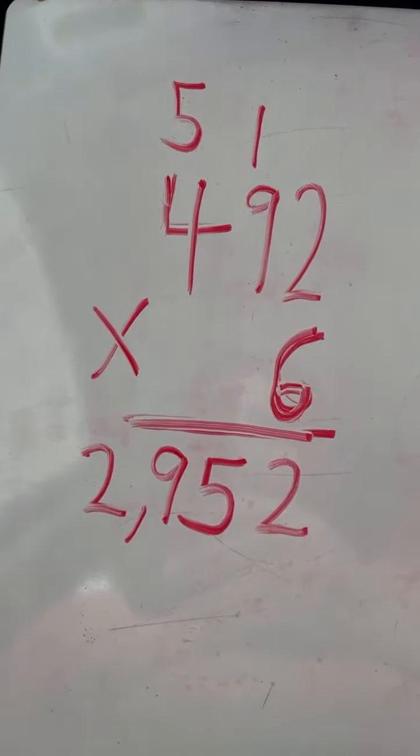And we have our final answer. Four hundred ninety-two times six equals two thousand nine hundred fifty-two.